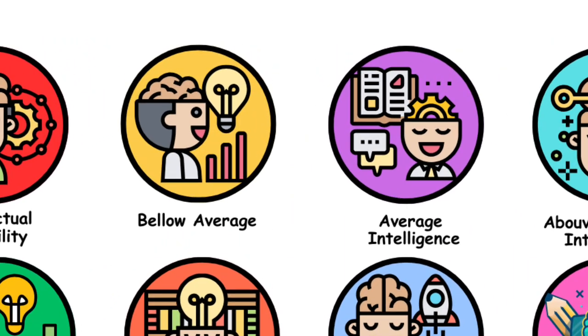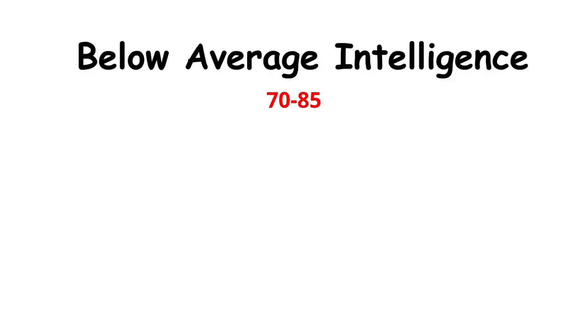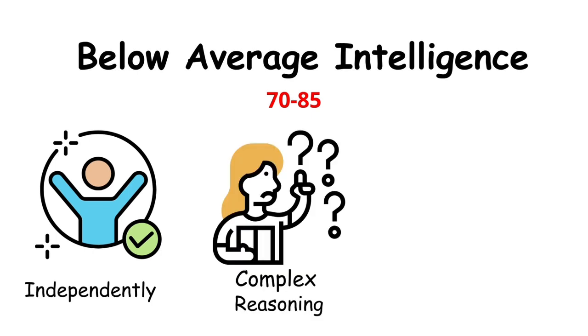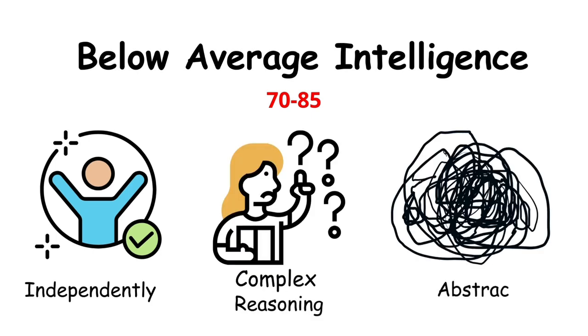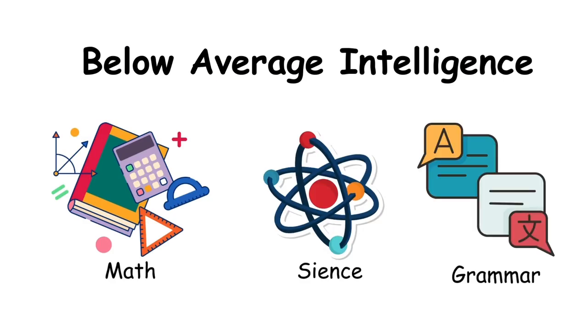Below average intelligence refers to having an IQ between 70 and 85. People at this level can live independently, but complex reasoning or abstract thinking may be harder. Subjects like math, science, or grammar can feel challenging.